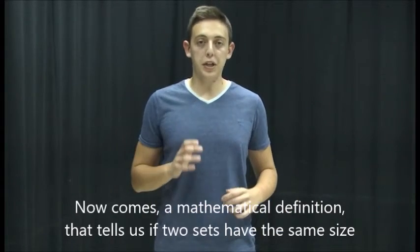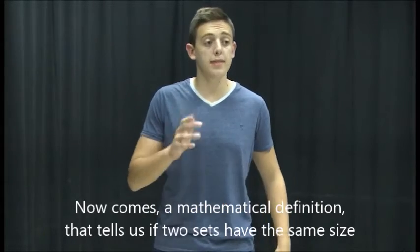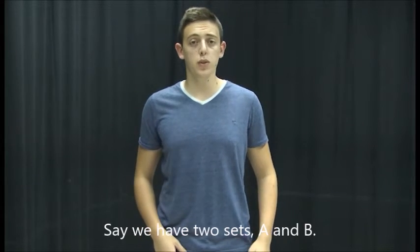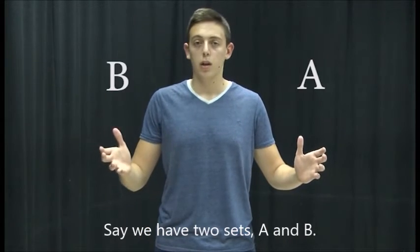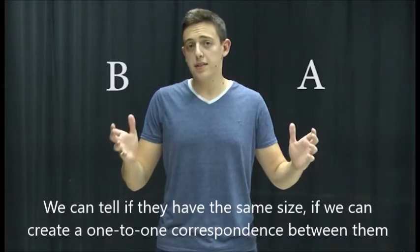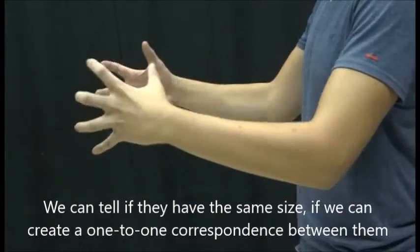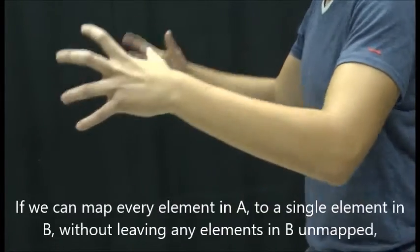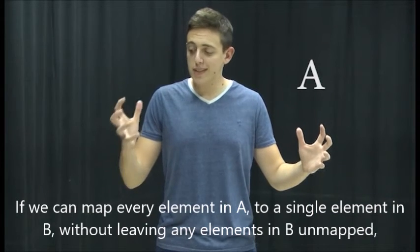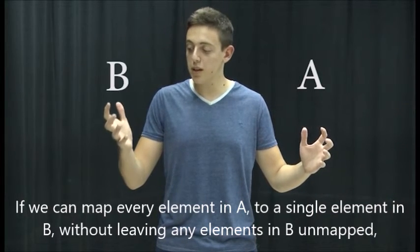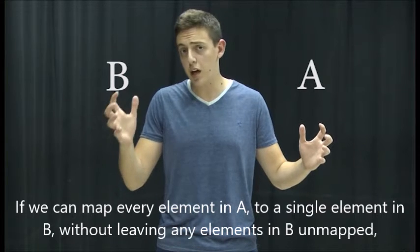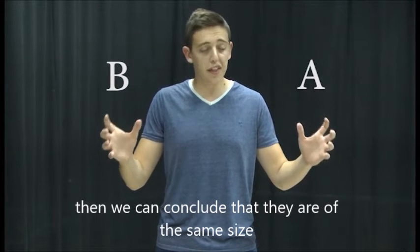Now comes a mathematical definition that tells us if two sets have the same size. Say we have two sets, A and B. We can tell that they have the same size if we can create a 1 to 1 correspondence between them. If we can map every element in A to a single element in B without leaving any element in B unmapped, then we can conclude that they are of the same size.